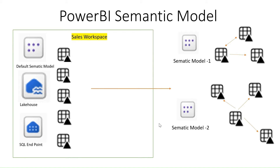A semantic model is nothing but a logical representation of your tables which are residing in the lake house or warehouse. Whenever you create a lake house, a default semantic model will be created, the lake house will be created, and a SQL endpoint will be created. You can see I have these five delta tables in my lake house, and over these tables I can create semantic models — semantic model 1 and semantic model 2.